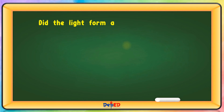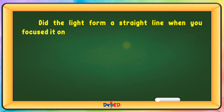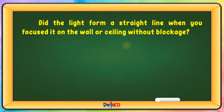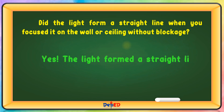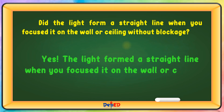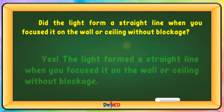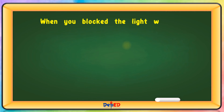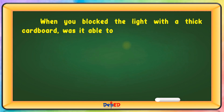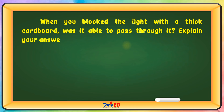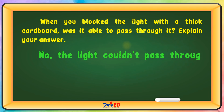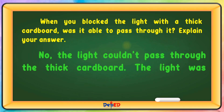Did the light form a straight line when you focused it on the wall or ceiling without blockage? Yes, the light formed a straight line when you focused it on the wall or ceiling without blockage. When you blocked the light with a thick cardboard, was it able to pass through? No, the light couldn't pass through the thick cardboard — the light was blocked by the board.